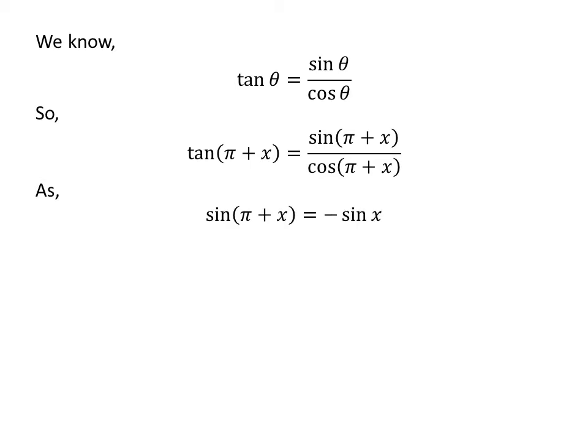As we know, the trigonometry identity sine of pi plus x is equal to minus sine of x. The proof of this trigonometry identity has been explained in the video appearing in the upper right corner. The link of the video has also been mentioned in the description section.